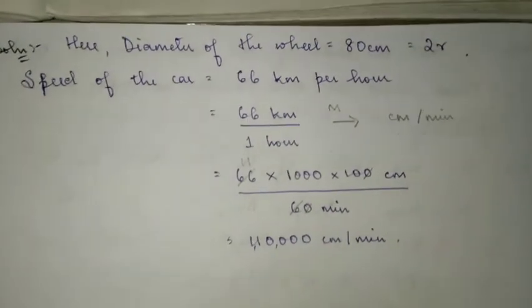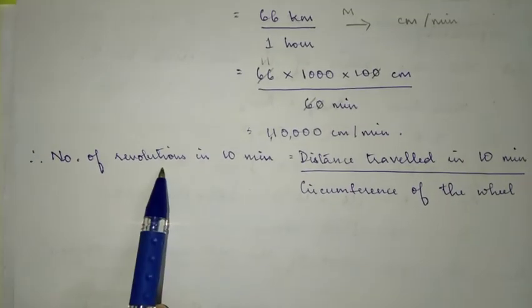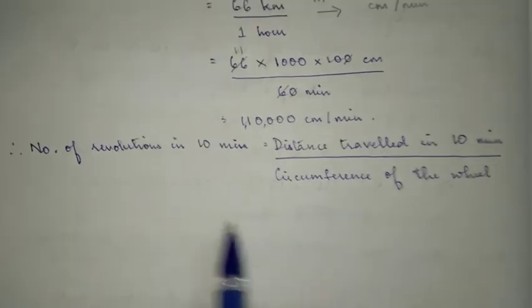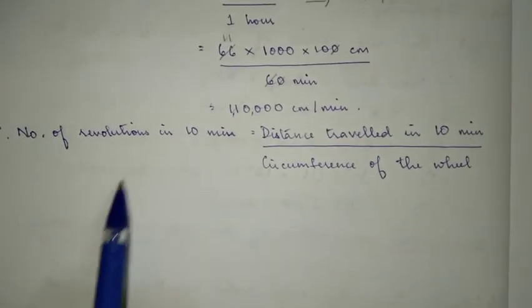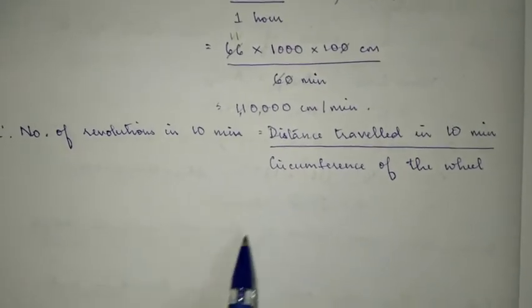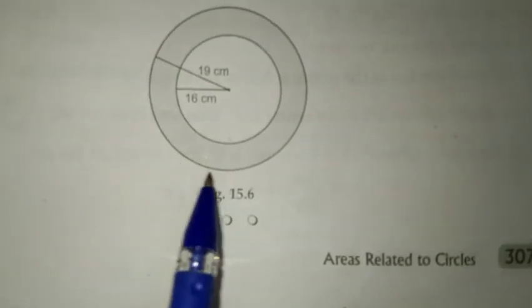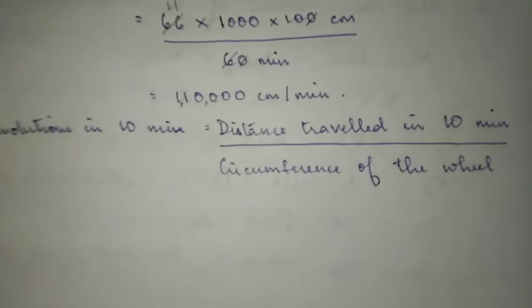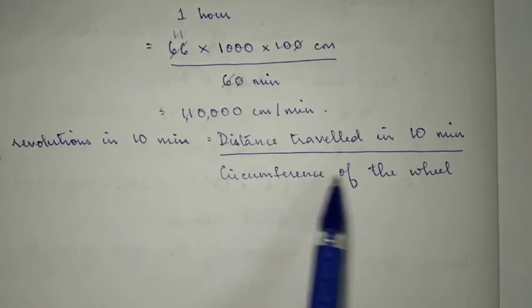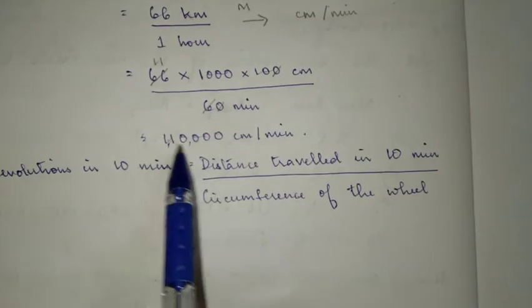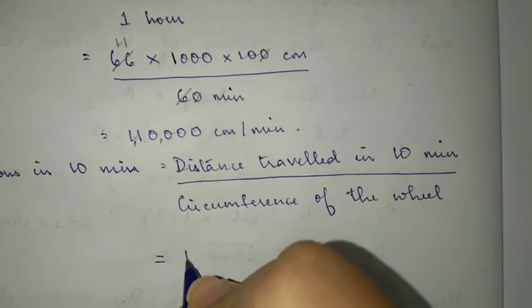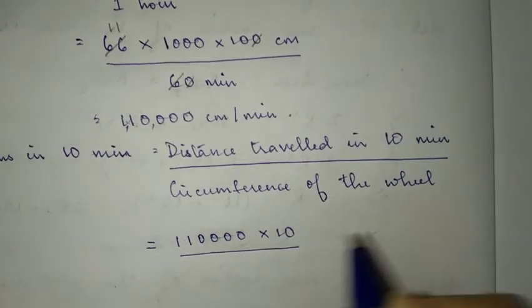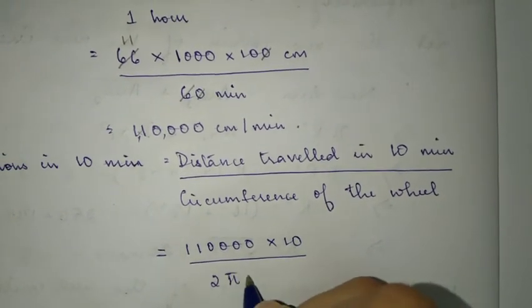Number of revolutions in 10 minutes, that's what they're asking us. The time given is 10 minutes. How do you find number of revolutions? Distance traveled divided by circumference. Distance traveled in 10 minutes divided by circumference. Distance formula is speed into time. Speed we have, time is 10 minutes. Circumference formula is 2πr.